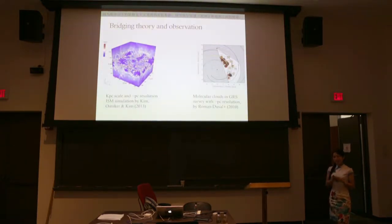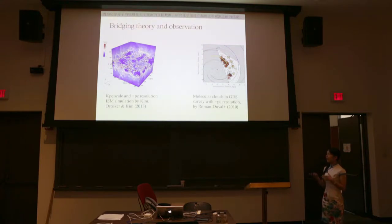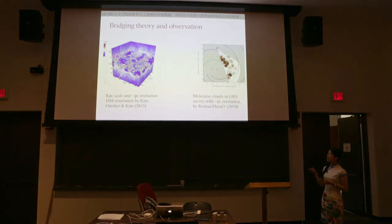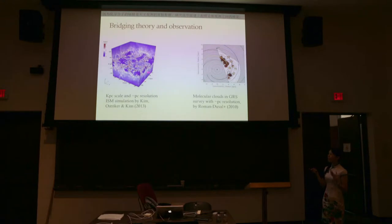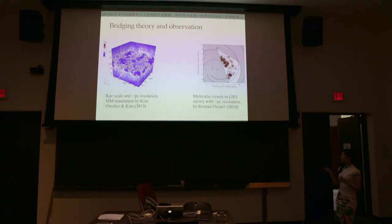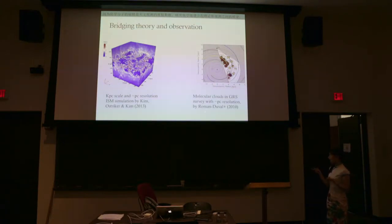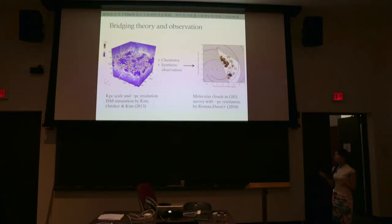It's a really great time to study chemistry because now we have observations and simulations at a similar scale, so we can actually start to compare them very well. On the left is a simulation of a piece of the galaxy showing turbulent multiphase gas, and on the right is a molecular cloud survey — observations of a big piece of our galaxy at similar scale and resolution. To link our theoretical model to observable quantities, we need both chemistry and synthetic observations.